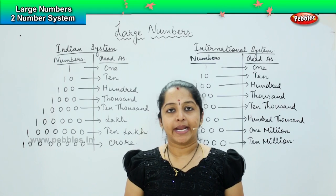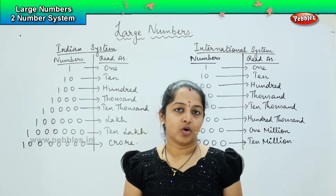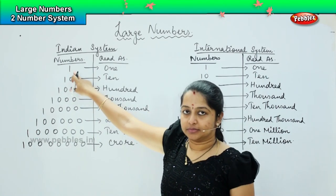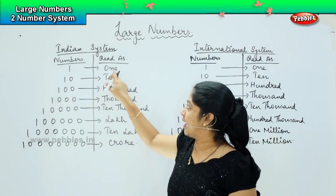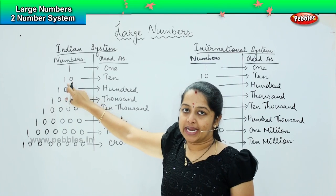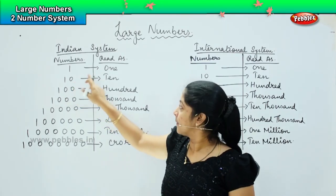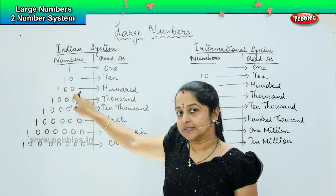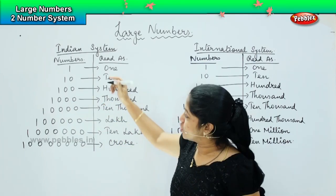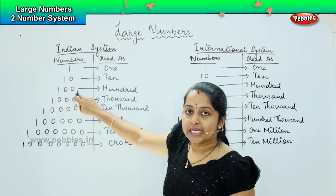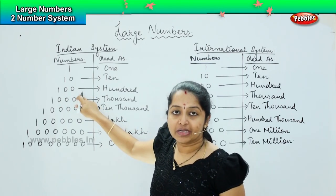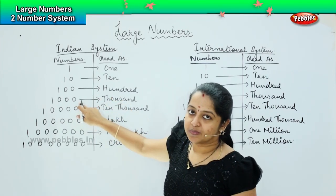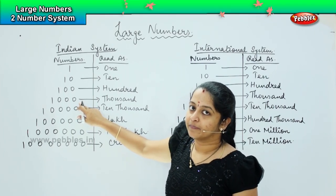Now children, I am going to take you in depth into what is the Indian system and what is the international system. Can you see the table here? When we write 1, it is called as 1. When I add one 0 behind 1, it becomes 10. When I add two 0s behind 1, it becomes 100. So when I add zeros, the position and place value of the given number changes.